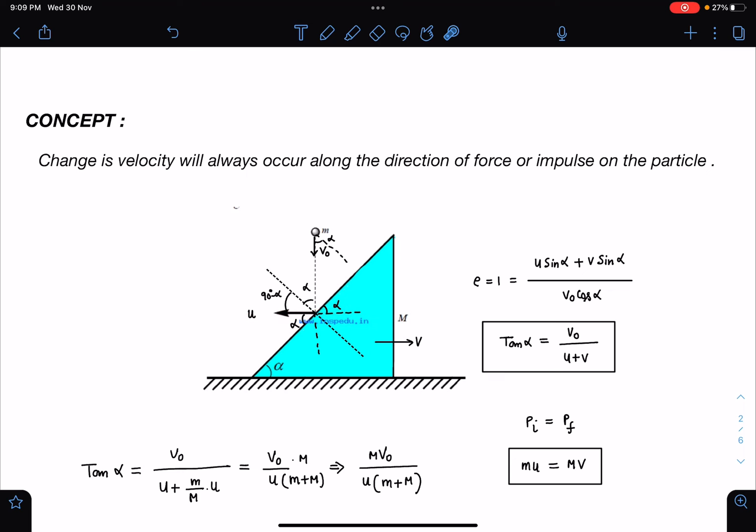I can write conservation of momentum along the horizontal direction, so mU equals MV. If I substitute the value of V, I am getting tan alpha in terms of V₀ and U.